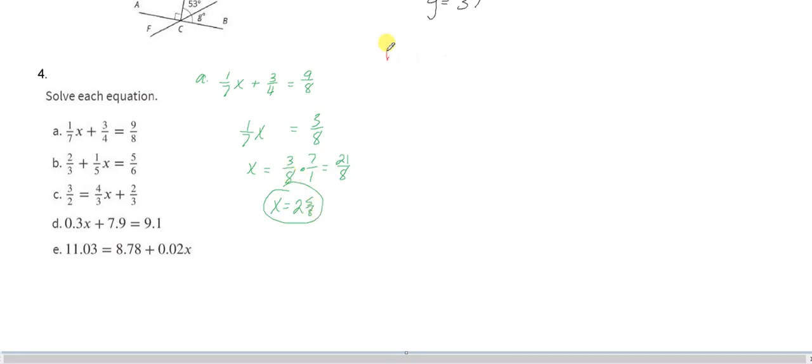Alright, so let's jump right into B. B says 2 thirds plus 1 fifth x equals 5 sixths. So what I'm going to do is I'm going to find out what 1 fifth x is worth by knocking this 2 thirds off. Now 2 thirds is equivalent to 4 sixths. So when I subtract 4 sixths from 5 sixths I get 1 sixth, and then to get x by itself I could divide by 1 fifth on both sides or I could multiply 1 sixth by 1 fifth's reciprocal like this, and that would tell me that x is 5 sixths. Done.